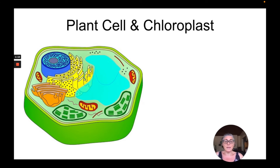It has a large vacuole which takes up a huge amount of space in the cytoplasm, and then it has the chloroplasts, which is the site of photosynthesis.